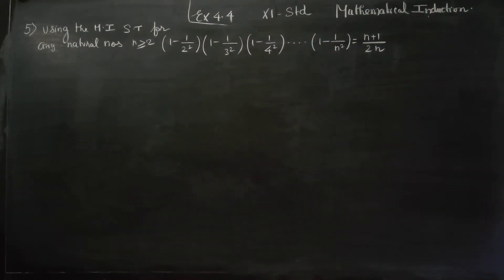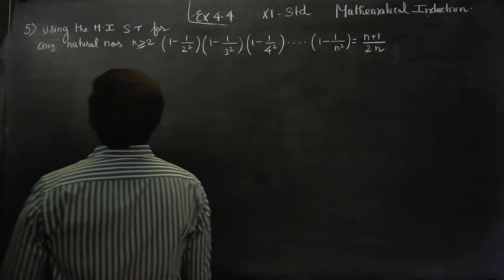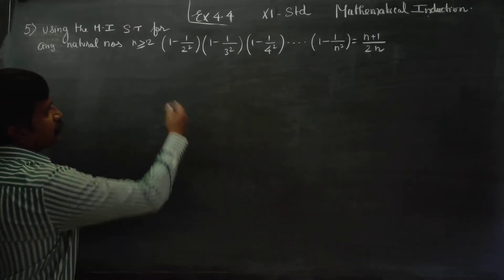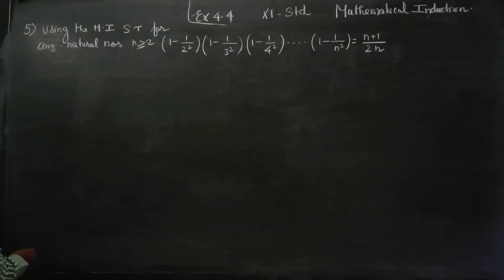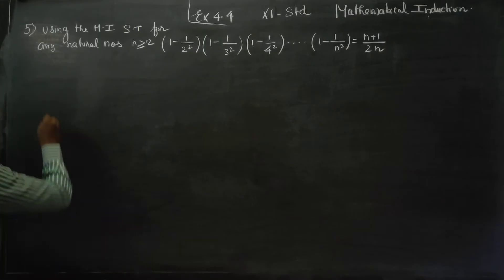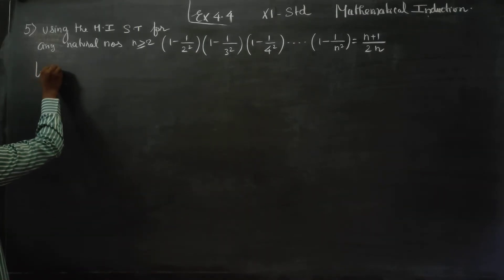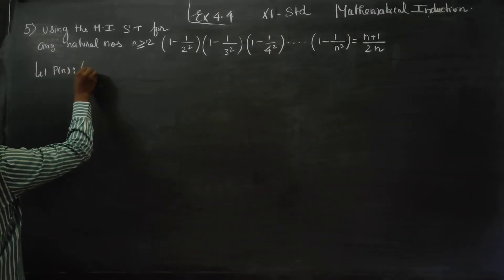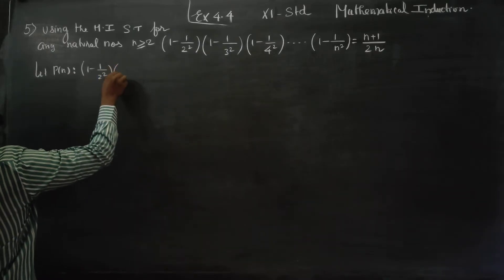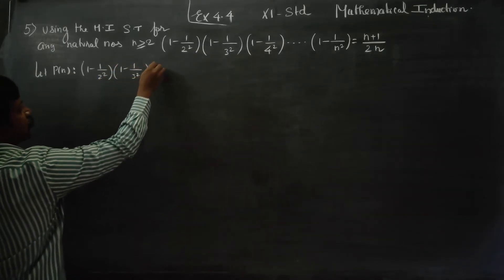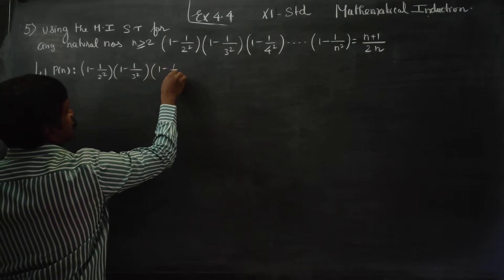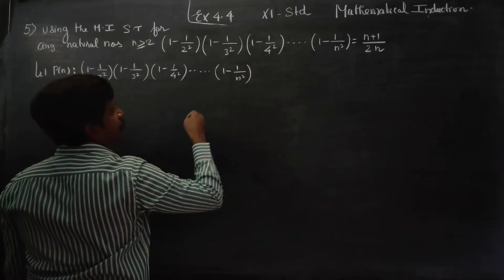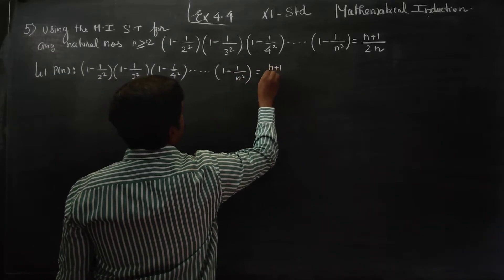Hello 11th standard students. In exercise 4.4, sum number 5, using mathematical induction, show that 1 minus 1 by 2 square, 1 minus 1 by 3 square, 1 minus 1 by 4 square, dot dot dot, 1 minus 1 by n square is equal to n plus 1 by 2n.